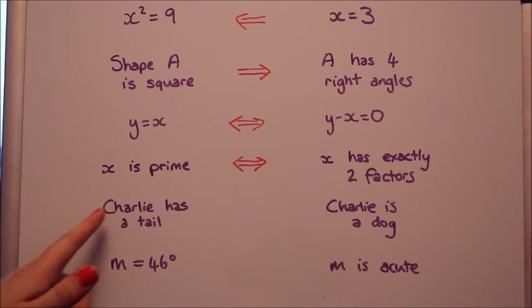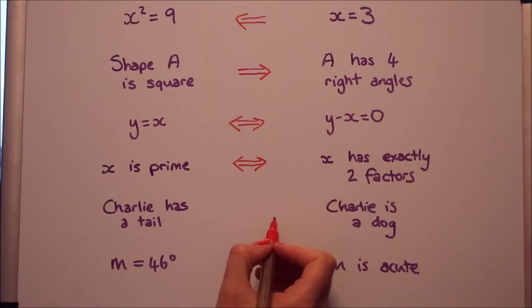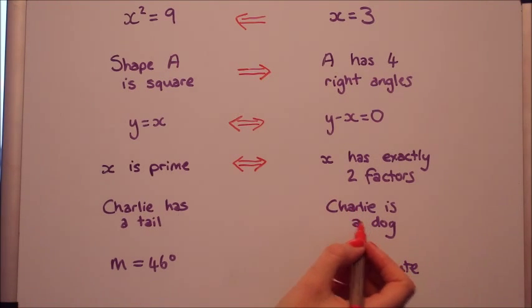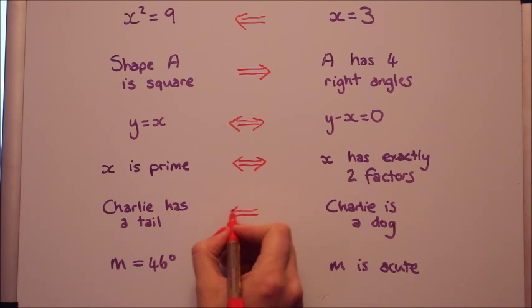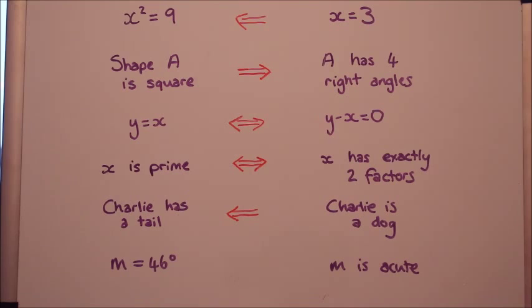Taking the next one, if Charlie has a tail, it doesn't actually mean that he's a dog. He could be any other kind of animal that has a tail. But if Charlie is a dog, yes, he does have to have a tail. Hopefully. Unless it's been cut off. So yes, it goes that way.